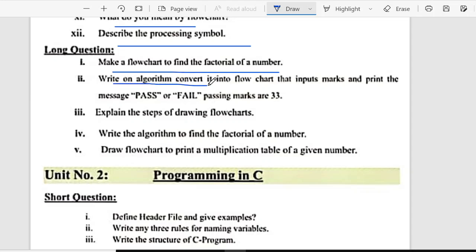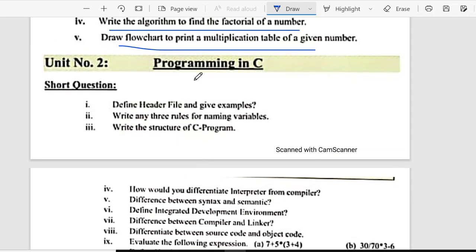Long questions: make a flowchart to find factorial of a number. Write an algorithm to convert it into a flowchart that inputs marks and print the message pass or fail, passing marks are 33%. 13th is, explain the steps of drawing flowchart. 14th is, write an algorithm to find the factorial of a number. Draw a flowchart to print multiplication table of a given number.